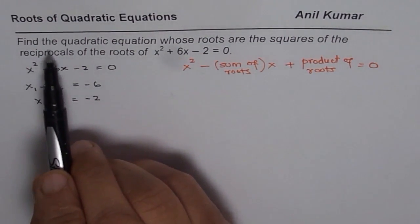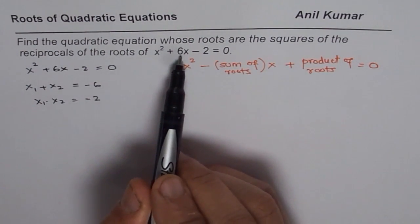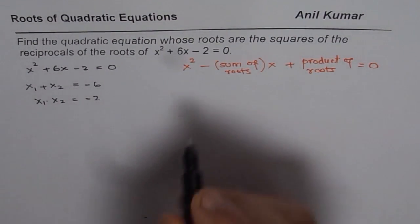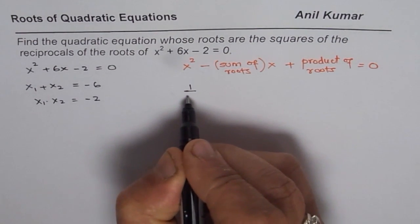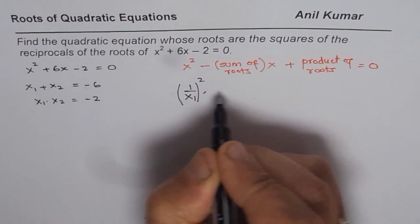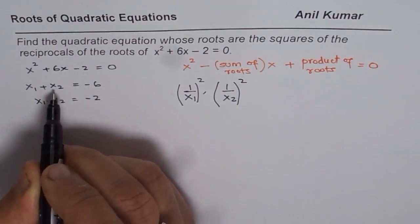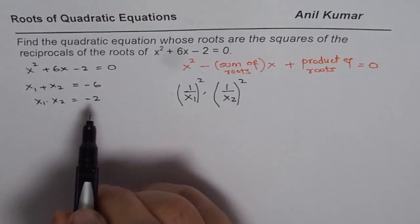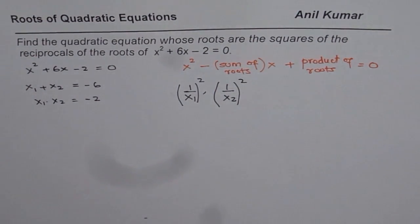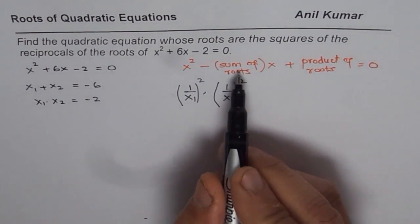The question asks for the squares of the reciprocal, so for the new equation, the roots should be 1 over x1 squared and 1 over x2 squared. If x1 and x2 are the roots of the original equation, then these squares of reciprocals are the roots of our new equation. To find the equation, we need to find their sum and product.